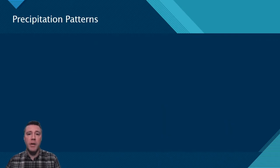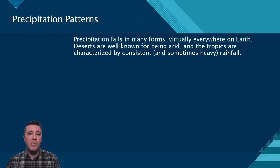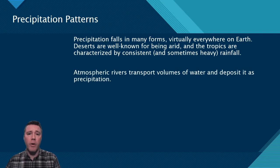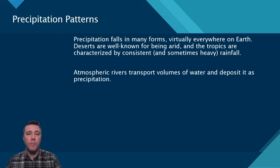Precipitation is the mechanism by which water falls from the sky, sometimes in liquid form and sometimes solid. Precipitation falls pretty much everywhere on Earth, although much less frequently in arid deserts and much more consistently in the tropics. Large volumes of moving air that contain water vapor are referred to as atmospheric rivers. Evaporated water in one region of Earth is transported by these rivers to other regions where it falls as precipitation.